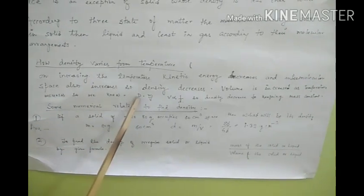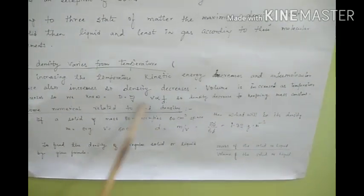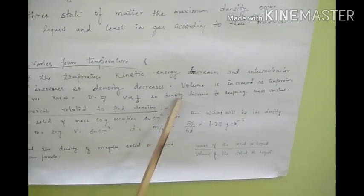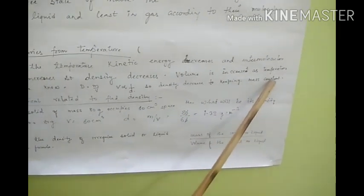We know that density is equal to mass by volume. So volume is inversely proportional to density. Density decreases while keeping mass constant.